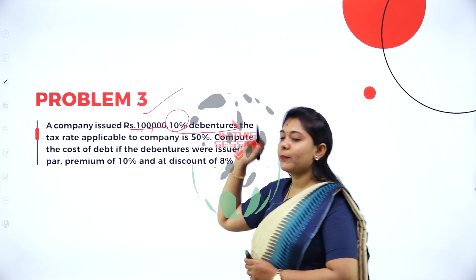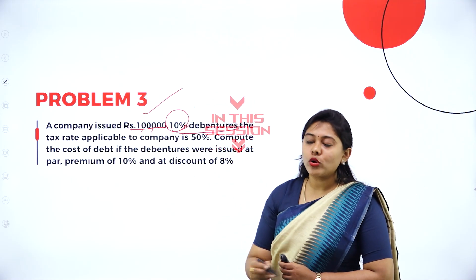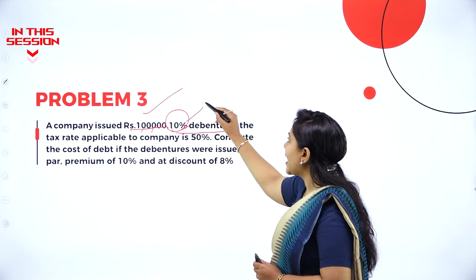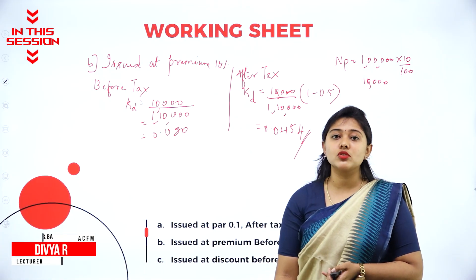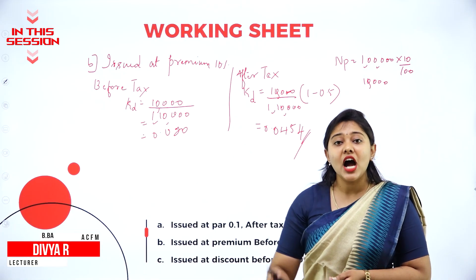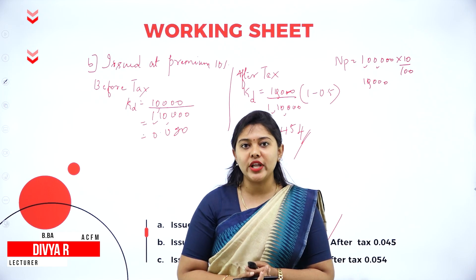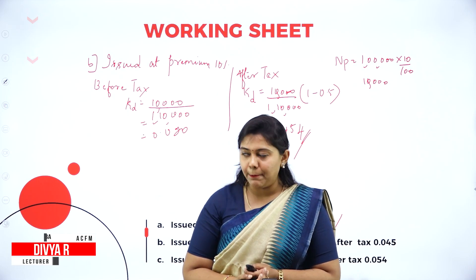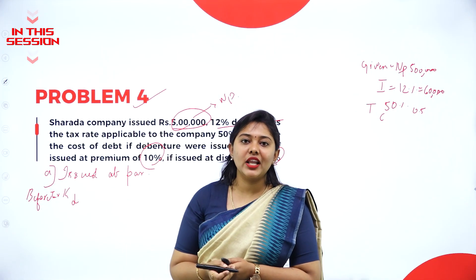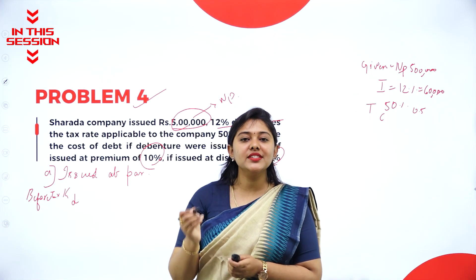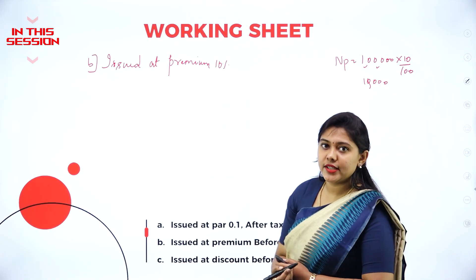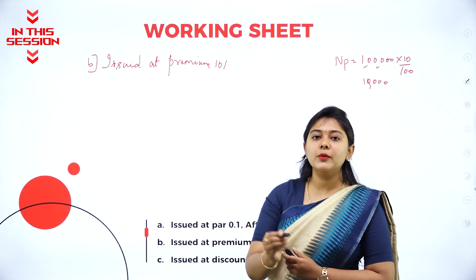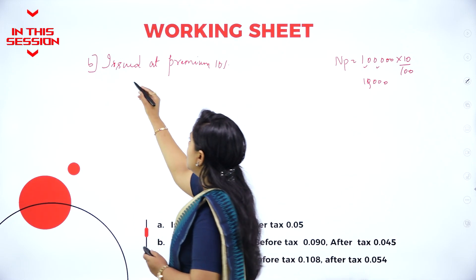What is the interest that you are supposed to pay for the debenture? It is 10%. This will be the cost of debt after tax if it is issued at a premium. Before tax, what is the formula? Interest divided by net proceeds. If you add 1 lakh plus 10,000, it will be 1 lakh 10,000.